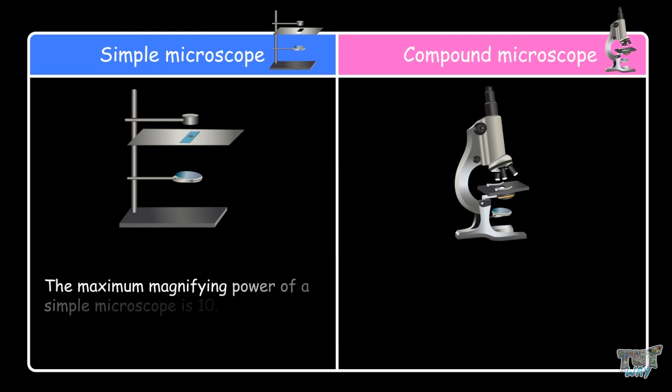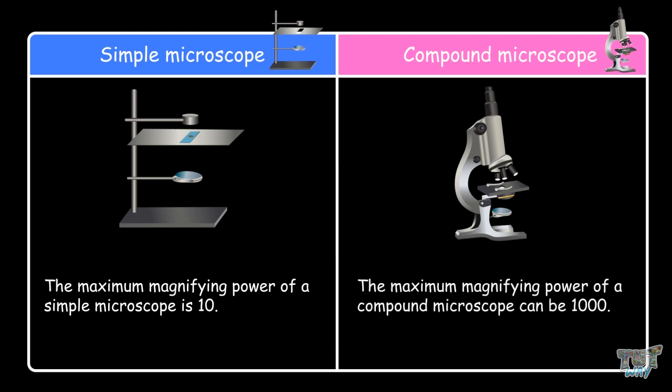The maximum magnifying power of a simple microscope is 10, whereas the maximum magnifying power of a compound microscope can be 1000.